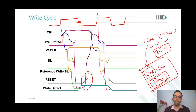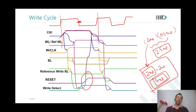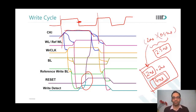For every memory, the reset could come at a different time. A student asks whether reference word line and reference bit line are actual bit lines in the memory array. The instructor confirms yes, and says they will discuss exactly how and where they are placed later. Write detect tells us the write operation has completed in the worst cell, and if you then generate reset, by the time the word line gets deselected, the write operation will be successfully completed everywhere.